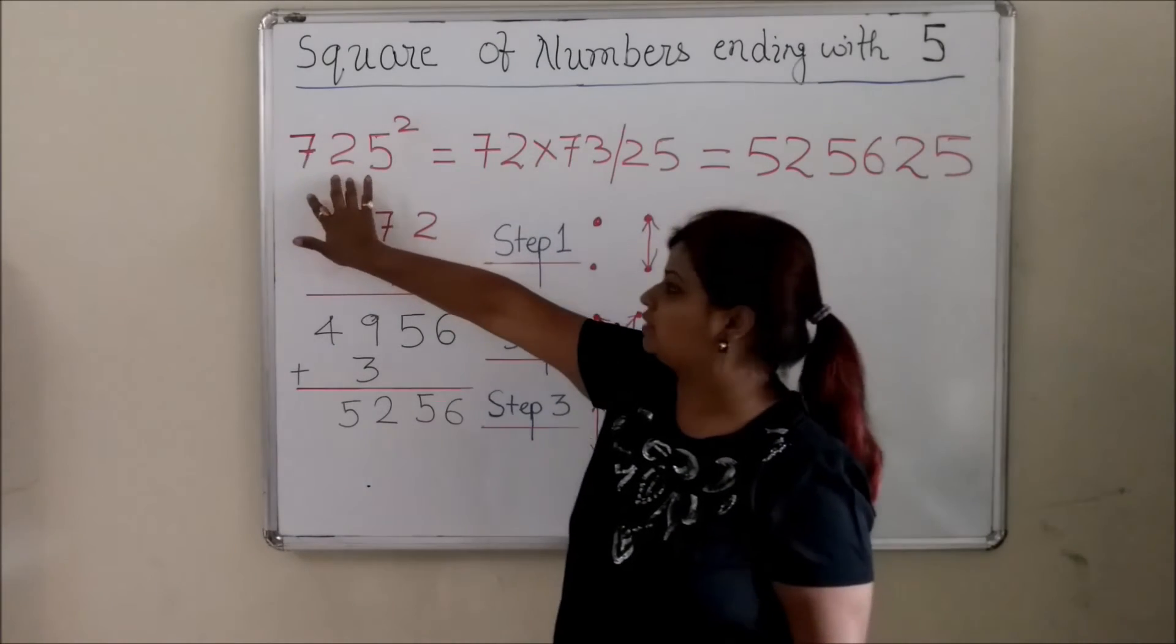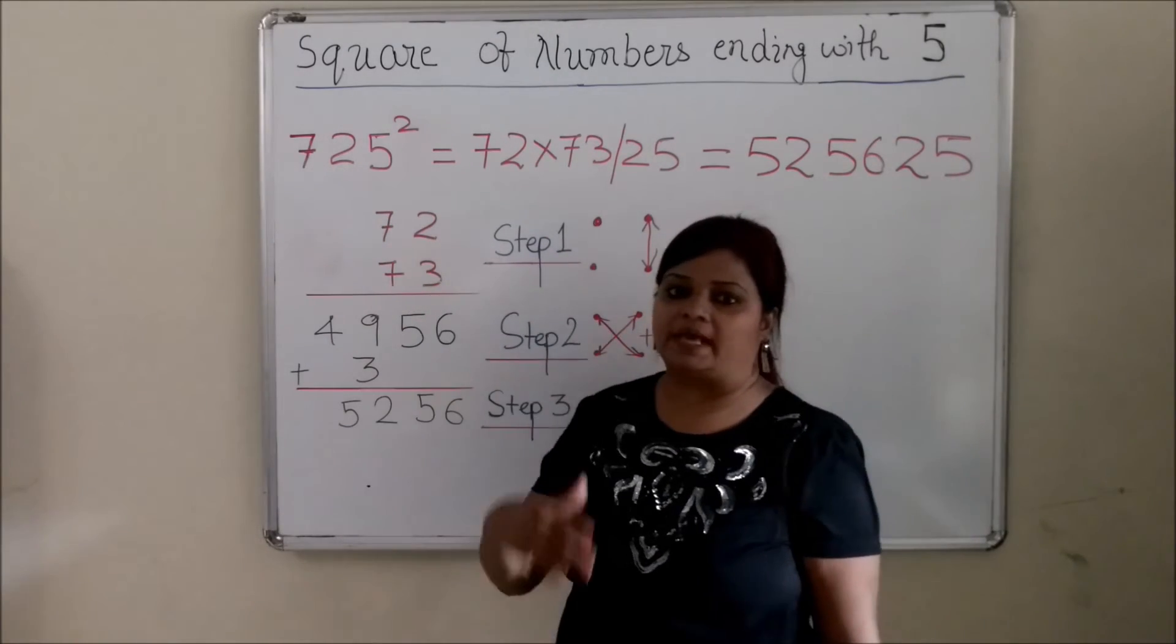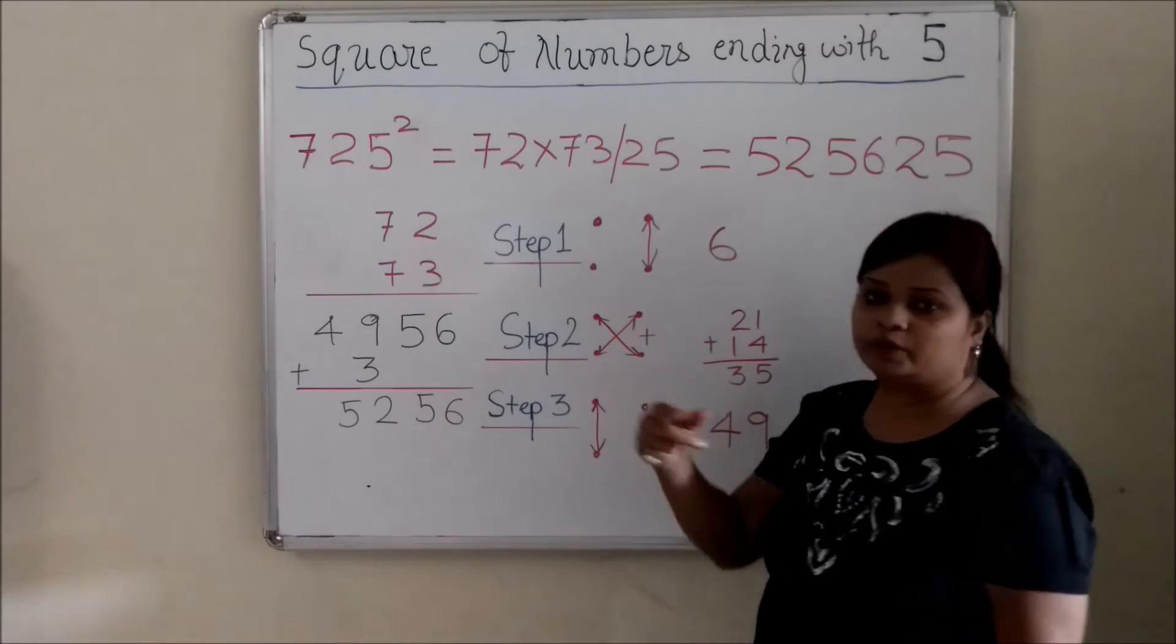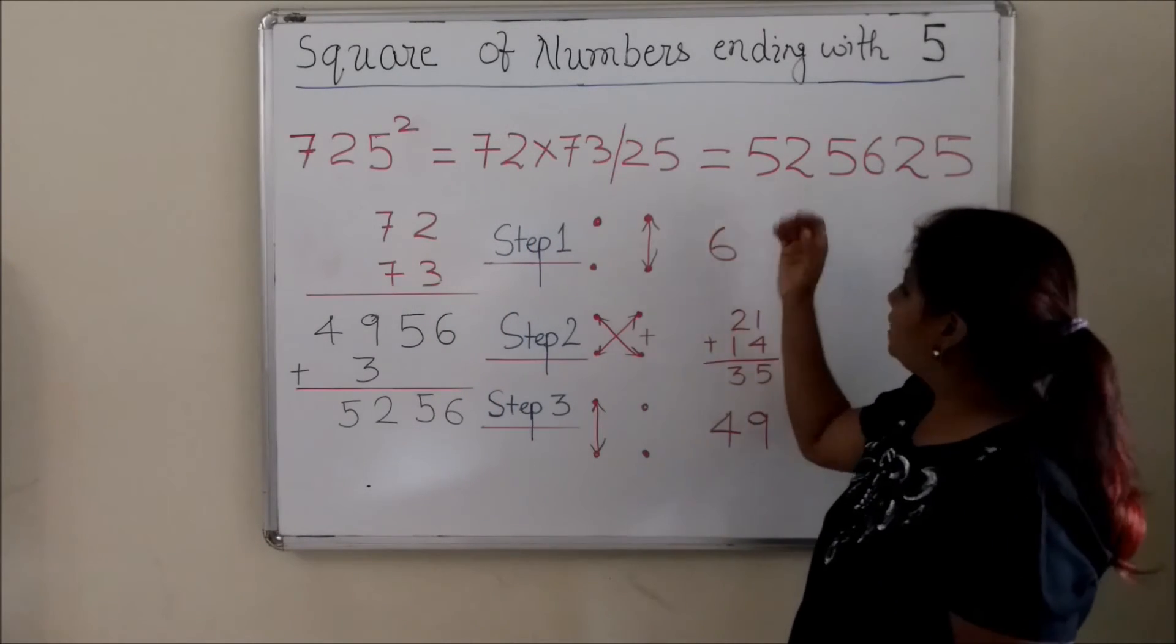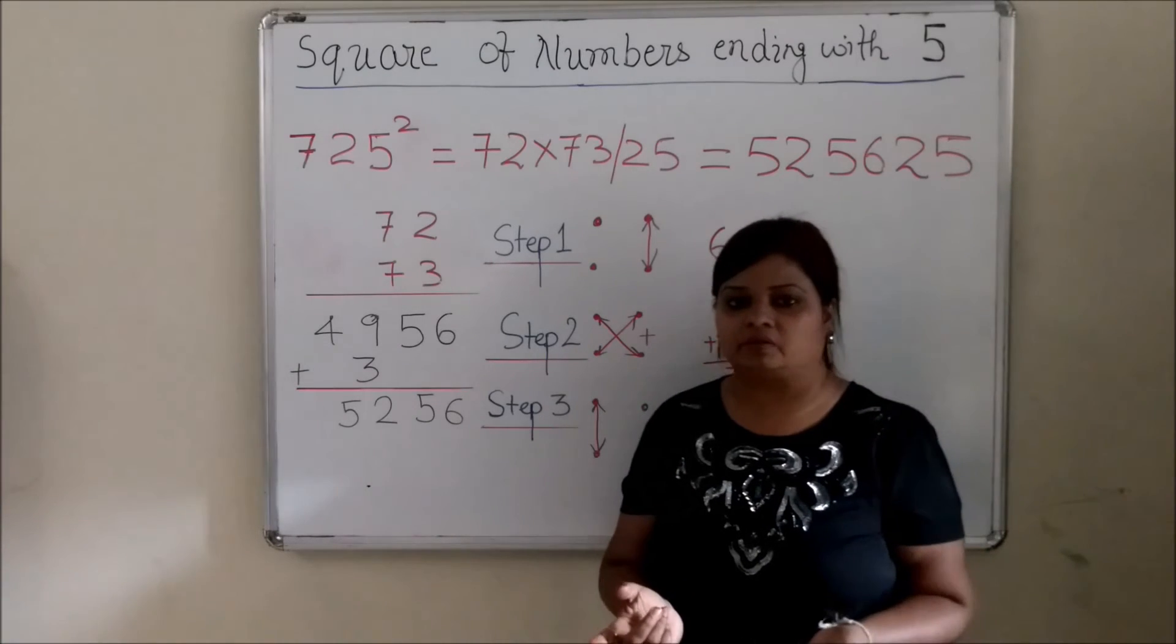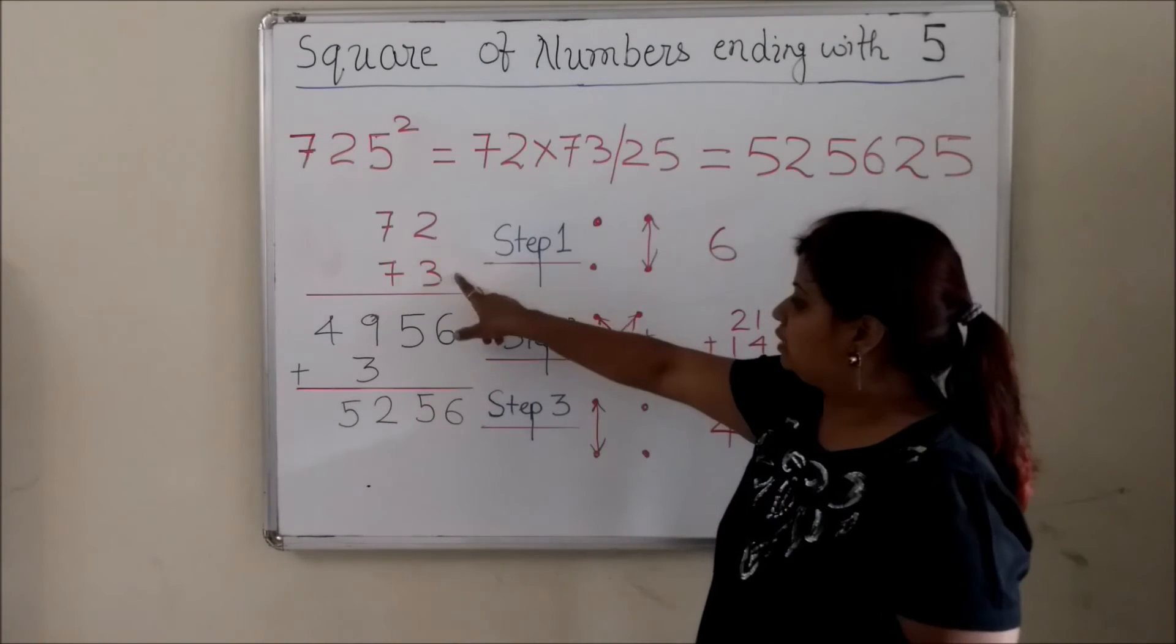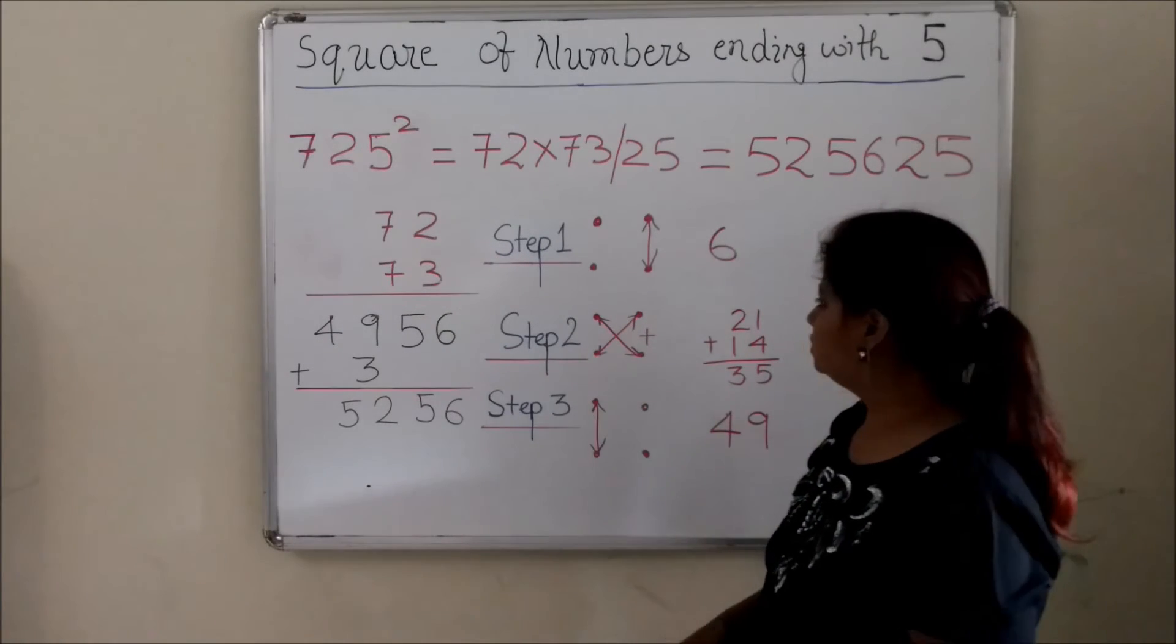Now what is remaining here? 72. So 72 has to be multiplied with the next number which is 73. Now how do I do it? This again you can do it with vertically and crosswise which I have already taught in my first video if you see. So 72 and 73. How do I do this?